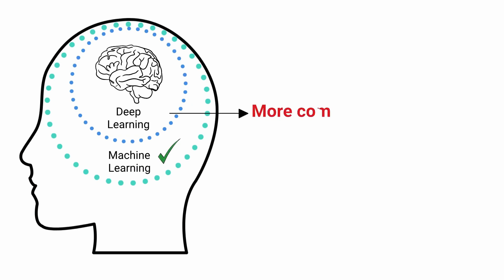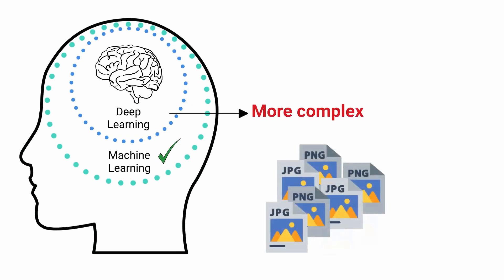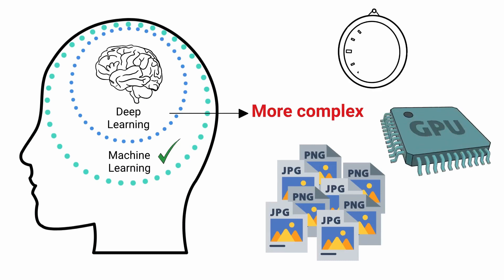Deep learning is generally more complex, so you will need at least a few thousand images to get reliable results. A high performance GPU means the model will take less time to analyze all those images.